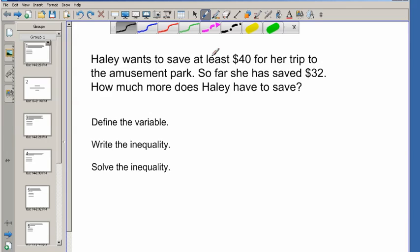Haley wants to save at least $40 for her trip to the amusement park. It's going to be important. At least $40. So far, she has saved $32. That's what she currently has. How much more does Haley have to save? How much more? So I've got the idea.